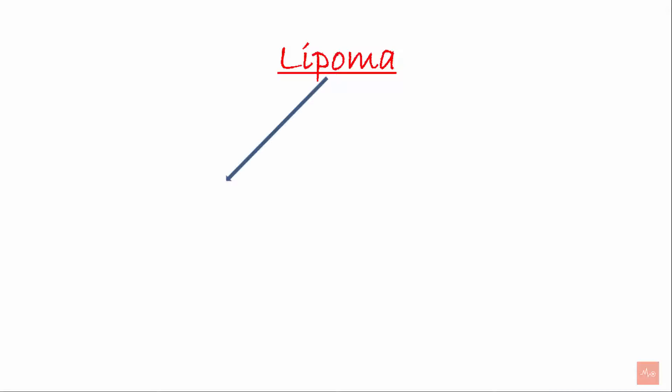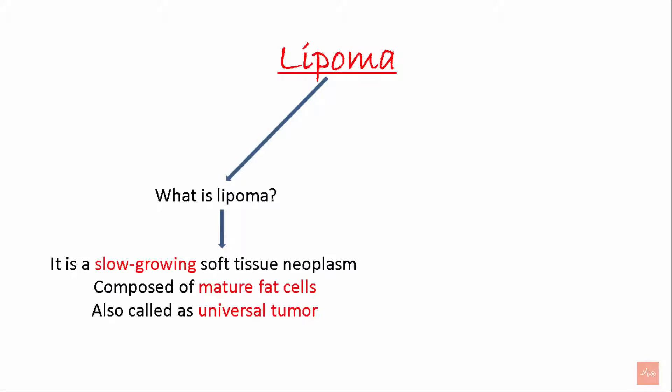Welcome back to MediClass. Lipoma. What is a lipoma? It is a slow-growing soft tissue neoplasm composed of mature fat cells. It is also called a universal tumor as it occurs anywhere in the body where fat is present.